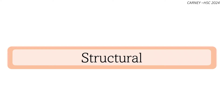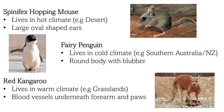A structural adaptation refers to the physical features of an organism that enable them to survive in their environment. The Spinifex hopping mouse is a nocturnal desert mammal that lives in the sandy country of Central Australia. They have large rounded ears with a large surface area through which blood flows and then returns, to cool them down.